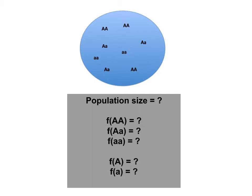Below the population size, F[AA] asks what is the frequency of the big A big A genotype. Those top three are genotypic frequencies; the bottom two — F(A) and F(a) — are allele frequencies. To calculate the genotypic frequency of big A big A, we count the number of individuals with that genotype: three out of eight total, giving a frequency of 37.5%.